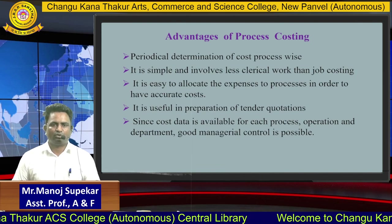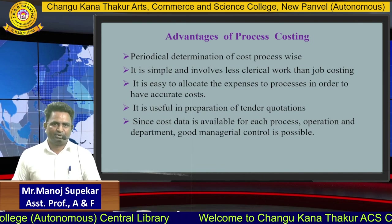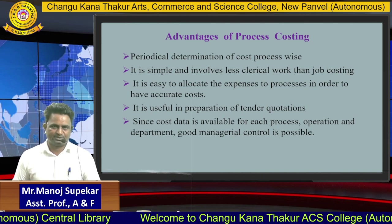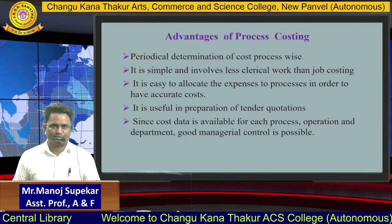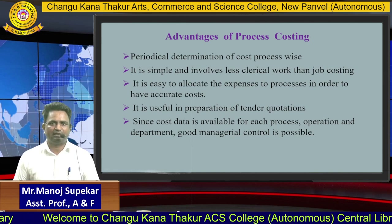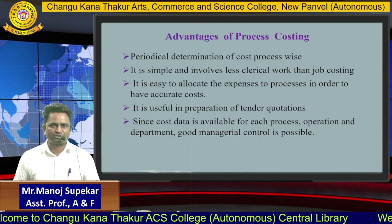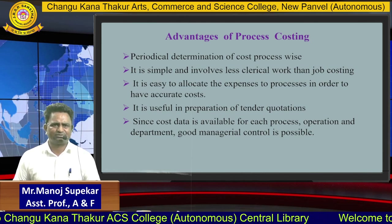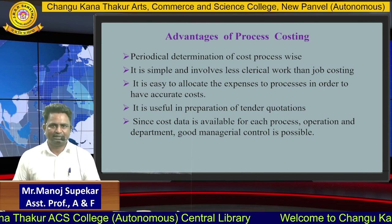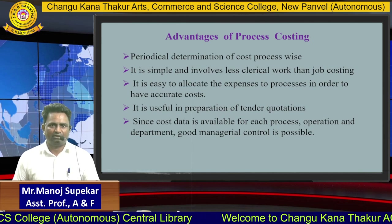What are the advantages of process costing? The first is periodical determination of cost on a process-wise basis — this is the most important benefit. It is simple and involves less clerical work than job costing. It is easy to allocate expenses to processes in order to have an accurate cost.